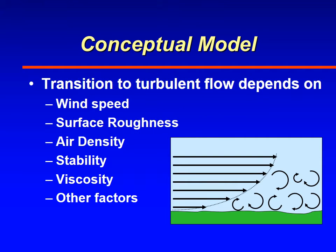The transition from laminar to turbulent flow depends on a lot of interrelated factors — you can't just isolate one. Of course, wind speed is one: the greater the wind speed, the more it will break into turbulent flow. Surface roughness is another — if the ground has irregularities, that tends to cause disruption in laminar flow, resulting in eddies.